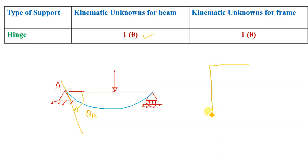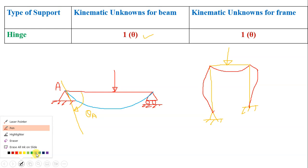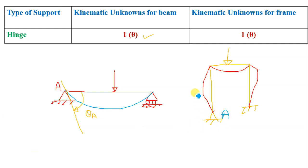For a frame hinged at one support and fixed at the other carrying a vertical load W, the possible deflection of columns and beams forms an elastic curve. If we draw a tangent at support A to this elastic curve, this gives the rotation at A. Thus, in case of a frame also, hinge support provides a single degree of freedom — that is one rotation. There is no displacement component delta.